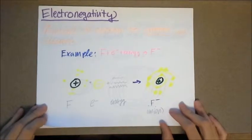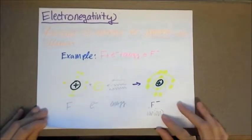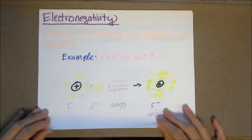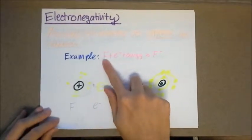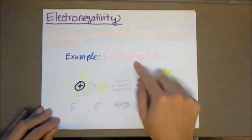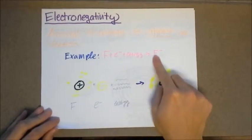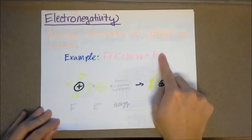Electronegativity is the amount of energy to attract an electron, which is kind of like the exact opposite of ionization energy. So let's take a look at fluorine. If we add an electron and some energy to fluorine, we can create a fluorine anion, which has a negative one charge.